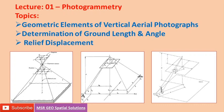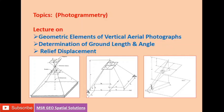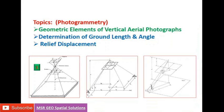Today we will try to understand the topic of photogrammetry. Under photogrammetry, we will discuss the geometry of elements of vertical aerial photographs, determination of ground length and angle, and relief displacement. Geometric elements of vertical photographs can be identified based on ground data, negative data stored at the focal plane, and positive data. The determination of ground length and angle can also be identified based on a ground coordinate system.